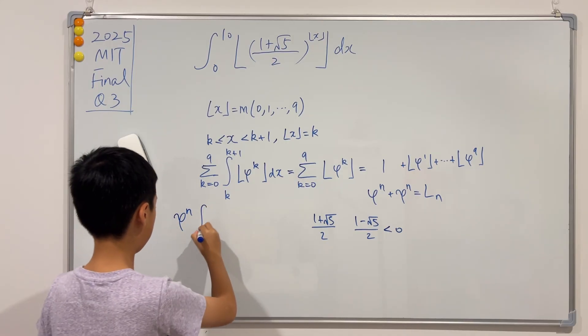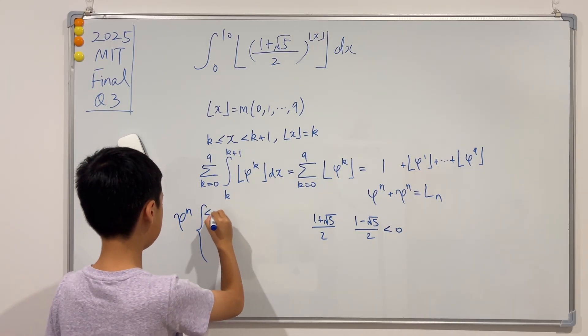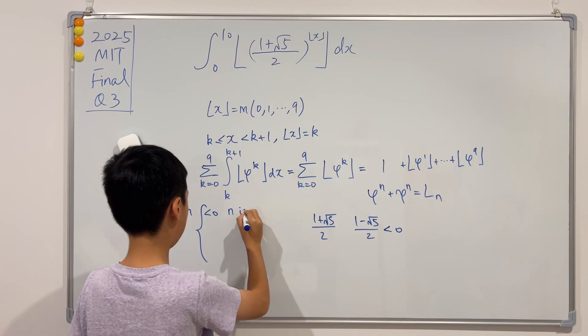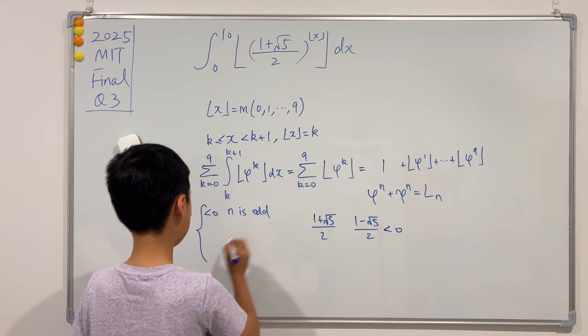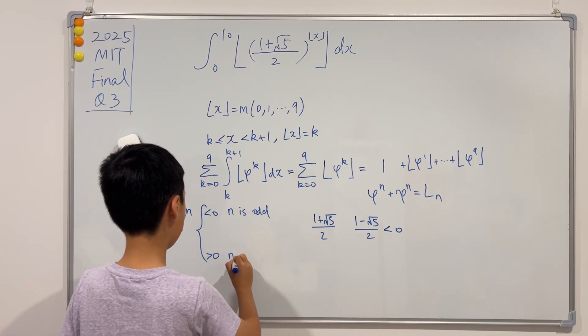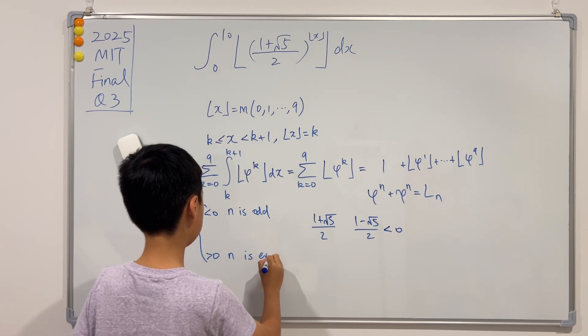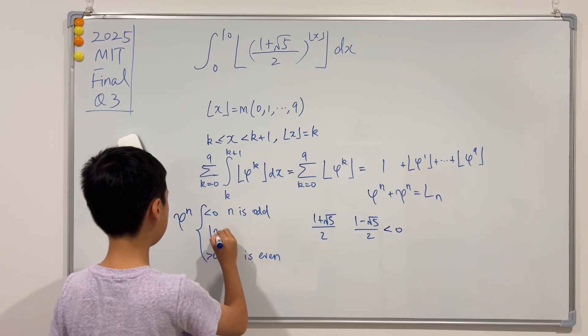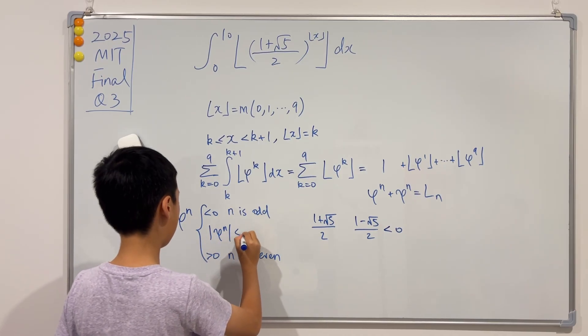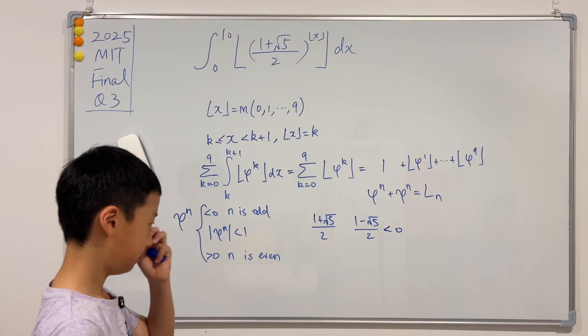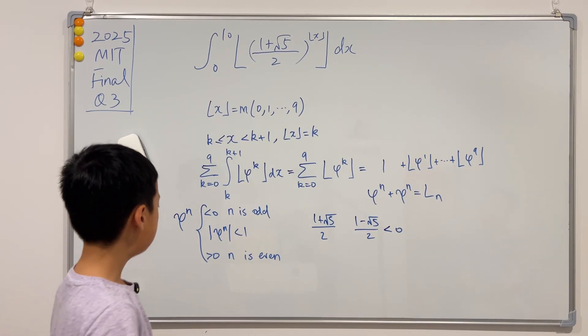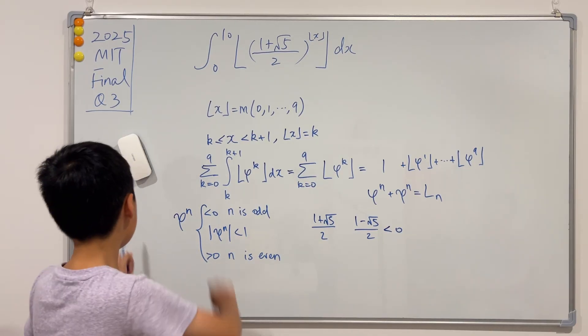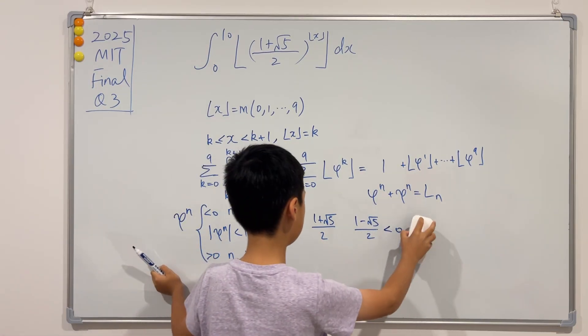Is greater than zero when n is even, and the one thing that they share in common is that the absolute value of c^n is always less than one. Okay, so now that we've mastered c, why don't we go back to the original equation?